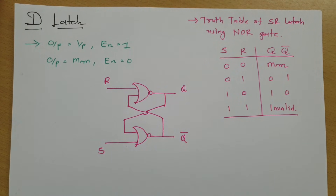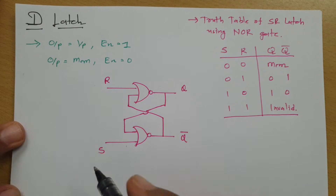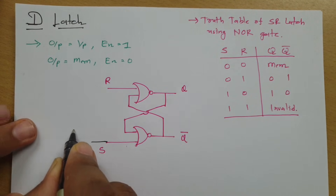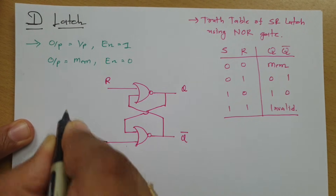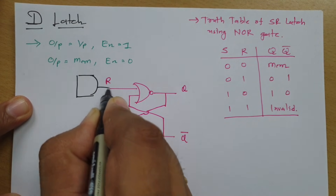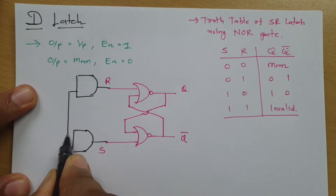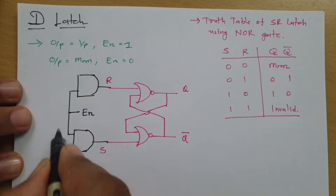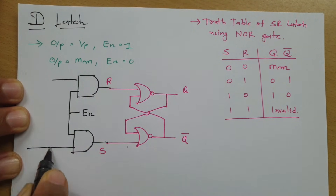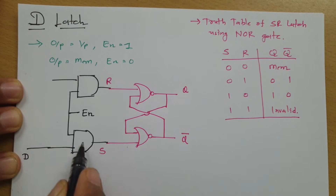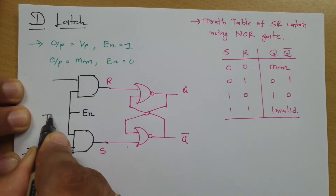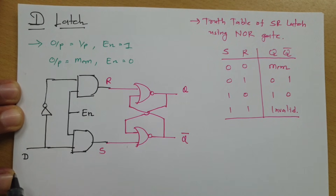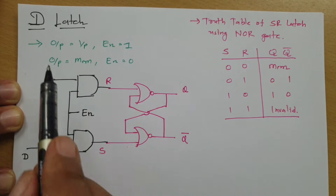Now let me explain the basic circuit of D-Latch as per this SR Latch. You will have to connect AND gates with the S and R terminals. With both AND gates, one terminal is the enable terminal. The second terminal — this D terminal — is directly connected with this AND gate, and this D terminal needs to be inverted and connected to the other AND gate. This is the complete circuit of D-Latch.